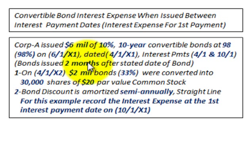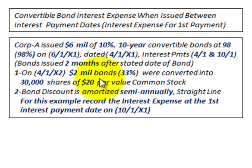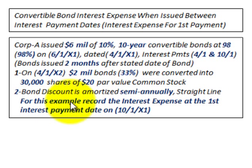This is what we have to deal with in this example, where the bond is issued between the interest payment dates — two months after the stated date. On 4-1-X2, $2 million or 33% of these bonds were converted into common stock, but we're not going to be concerned with that. What we're really looking at is the interest we have to pay on this bond at the first interest payment date. The bond is going to be at a discount, amortized semi-annually using the straight-line method. We'll record interest expense at the first interest payment date on 10-1-X1.